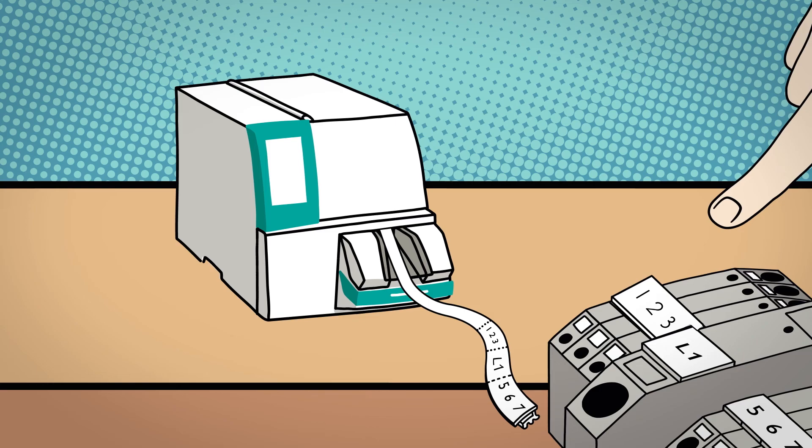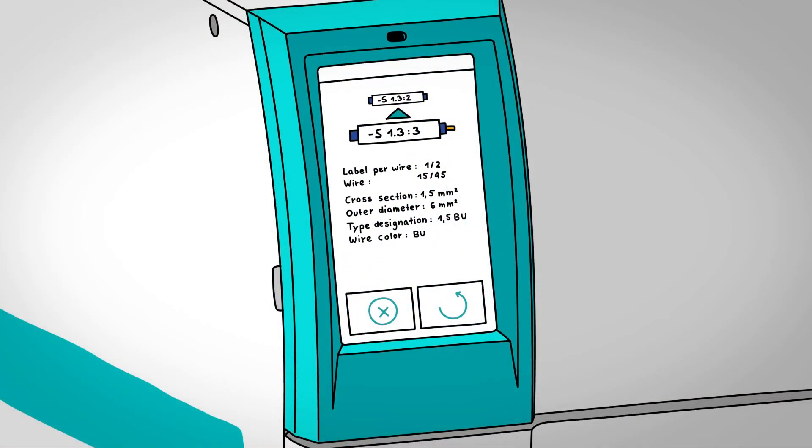The marking software guides the user step-by-step through the entire identification process. This occurs on both a desktop PC as well as via the printer display.